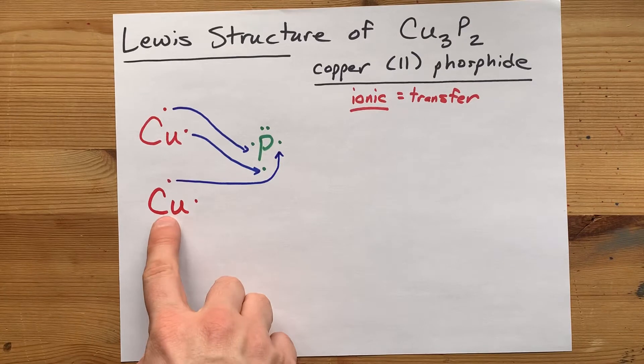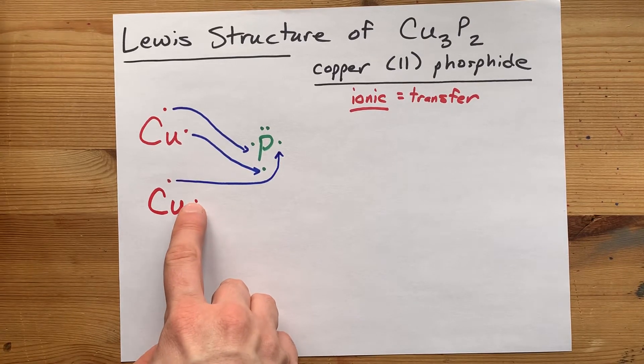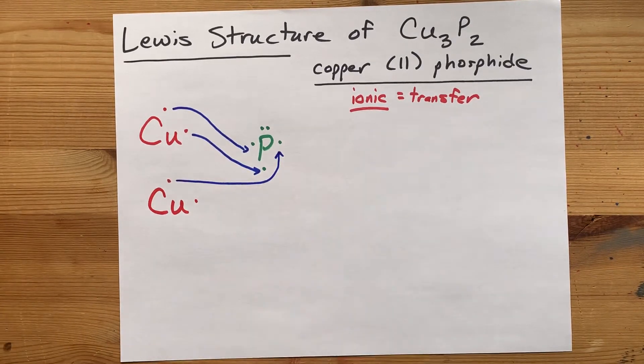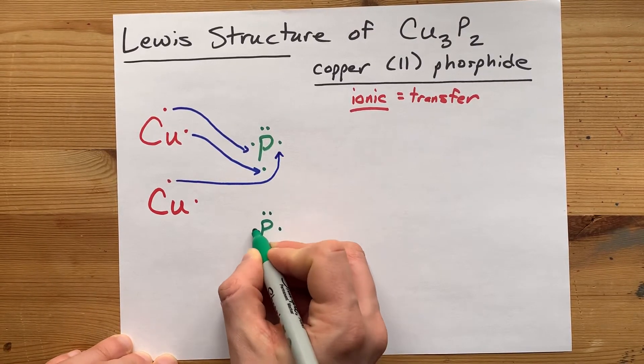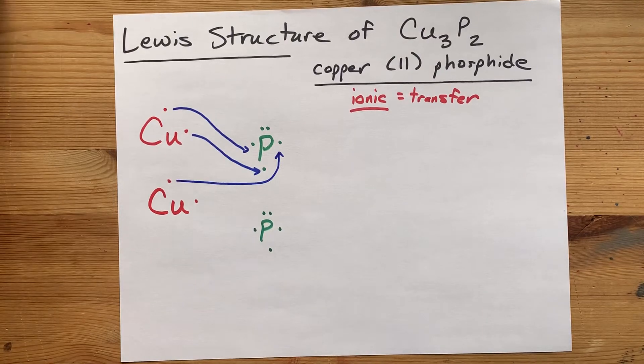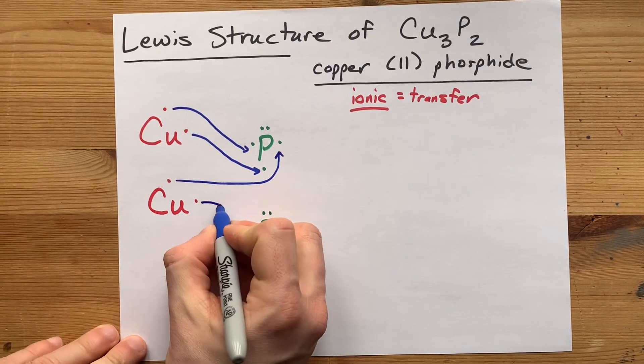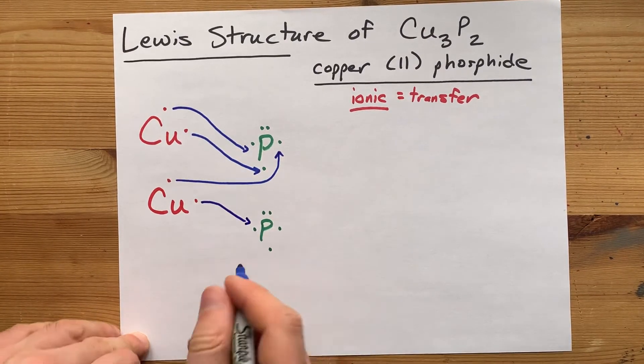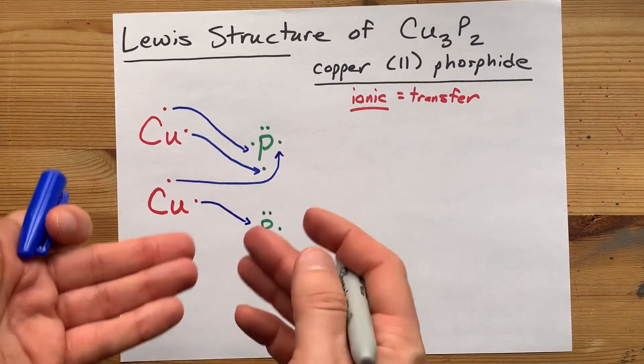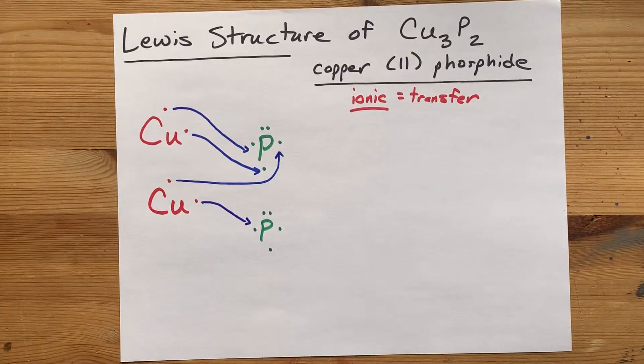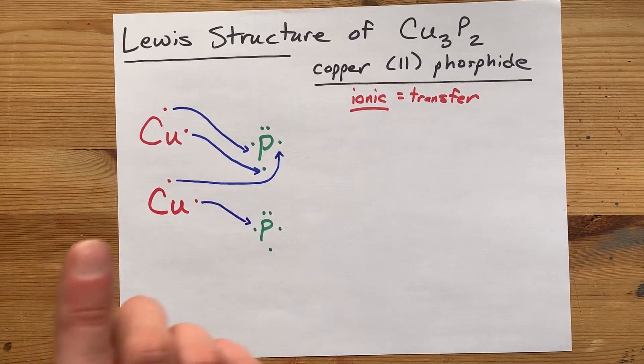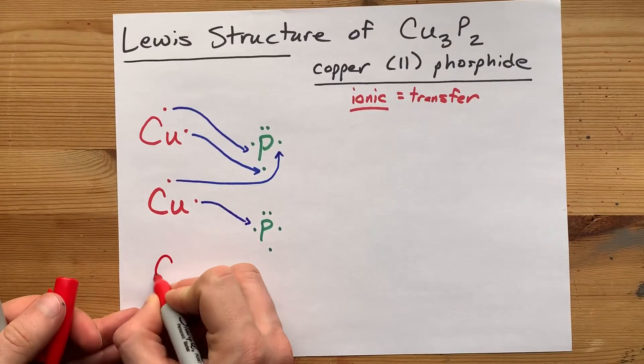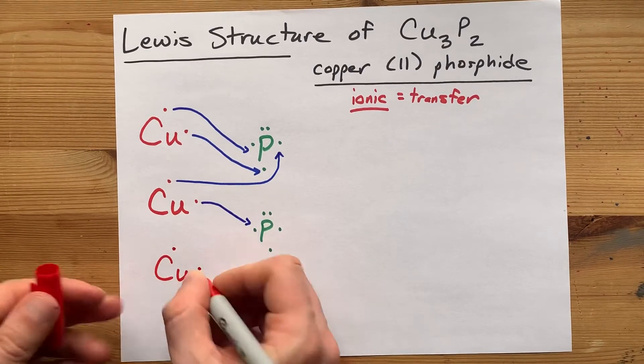Except this copper still has an extra electron to give away. Where's that going to go? The answer is another phosphorus with its five valence electrons. Copper can give an electron away there. But now that phosphorus is also unhappy. It has five plus one equals six electrons, and we need eight.